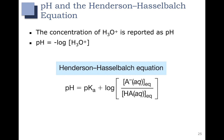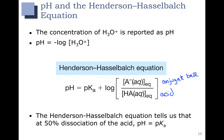Remember that HA is your acid and A- is your conjugate base. What this tells us is that when the concentration of A- and the concentration of HA are equal, then the pH and the pKa are equal. At 50% dissociation, pH is equal to pKa.